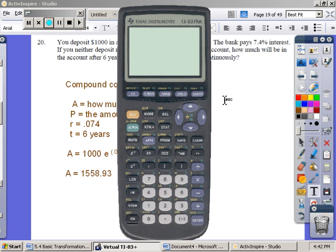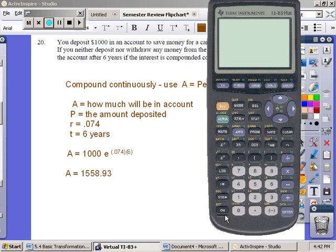So I go to my calculator. Type in 1,000 for the principal. Type 2nd LN for E. Multiply .074 times 6, end of parentheses. Enter.